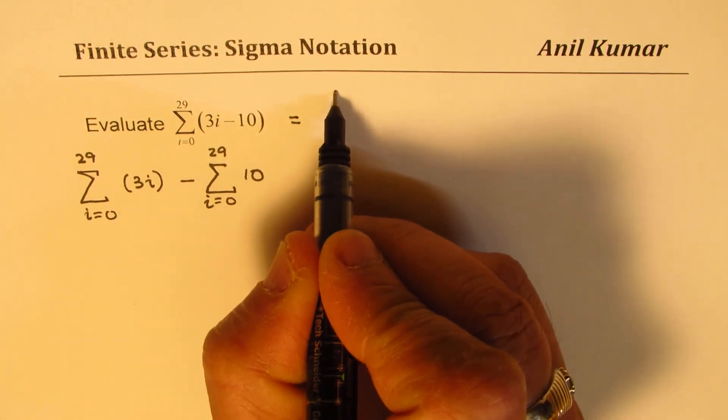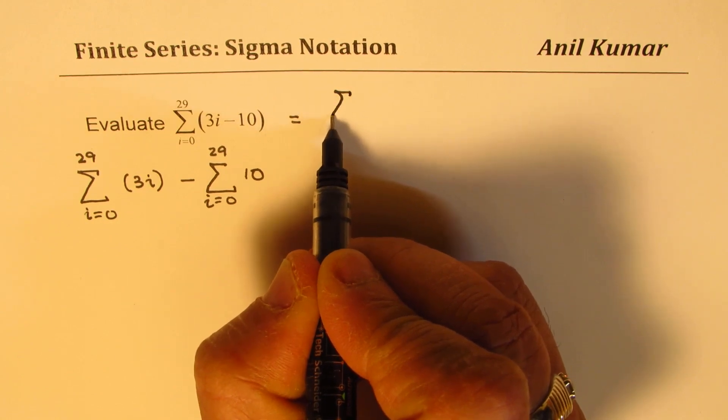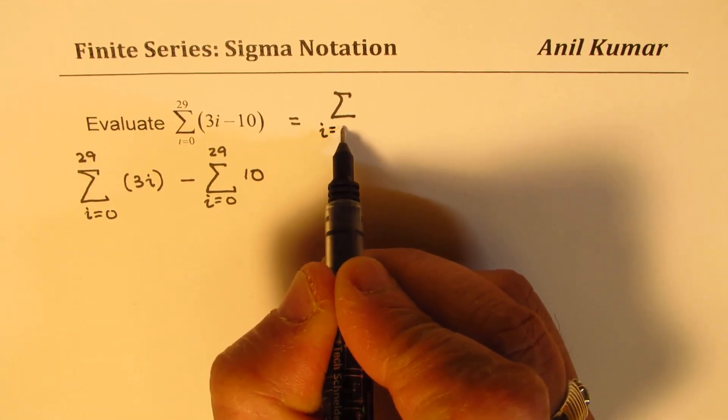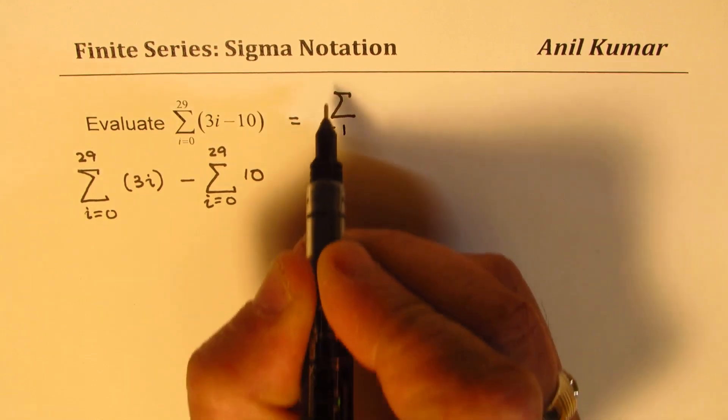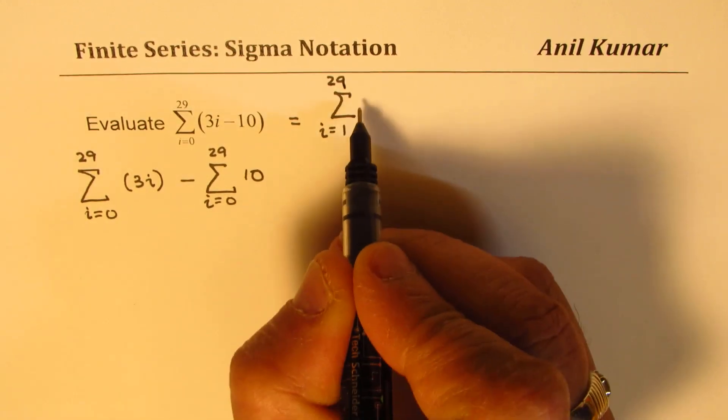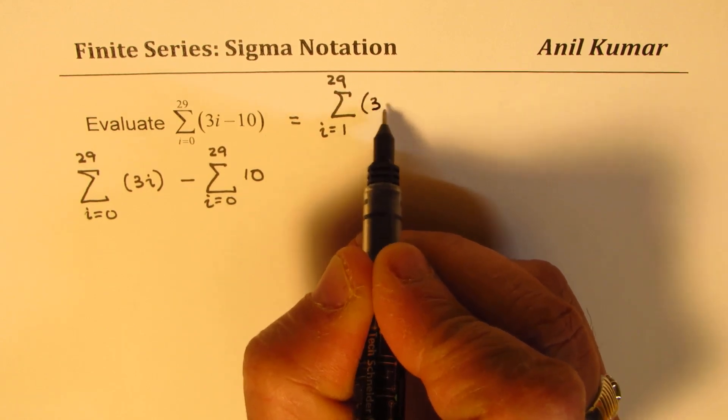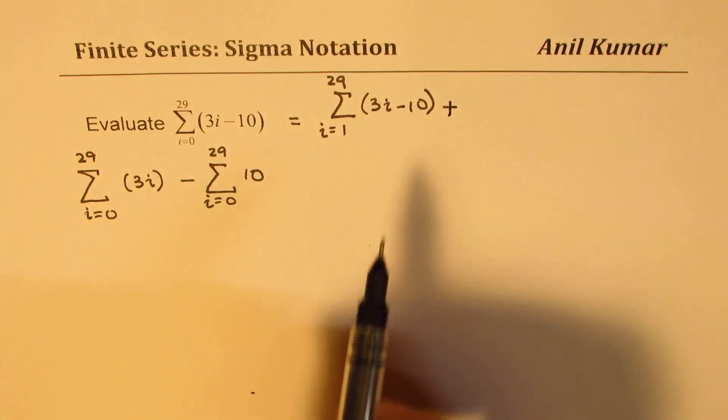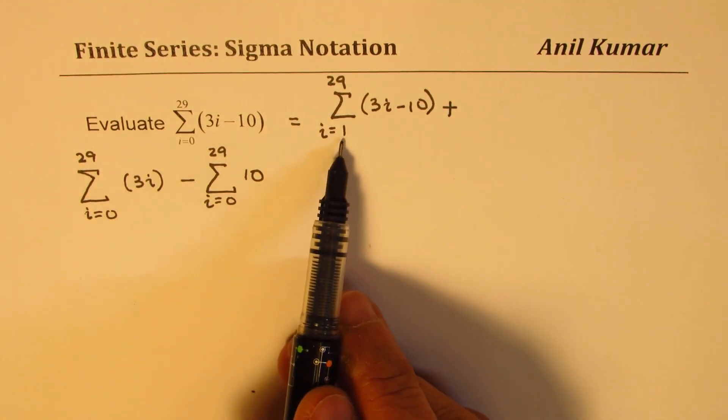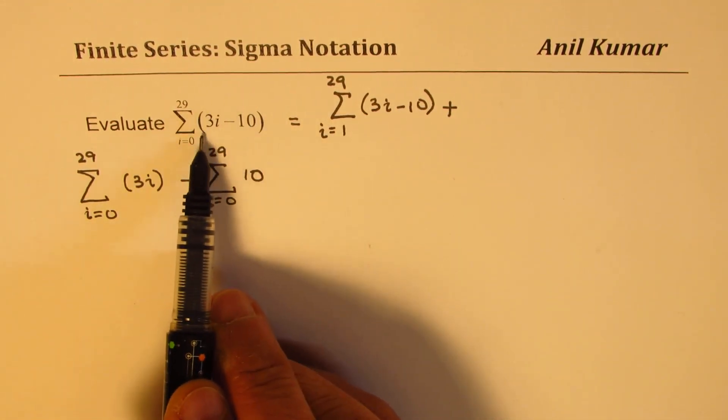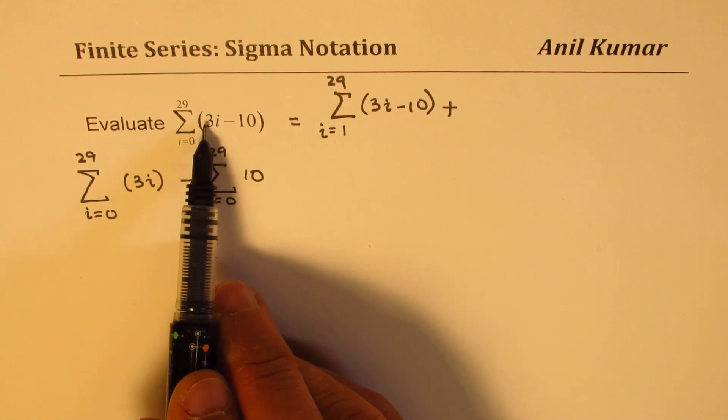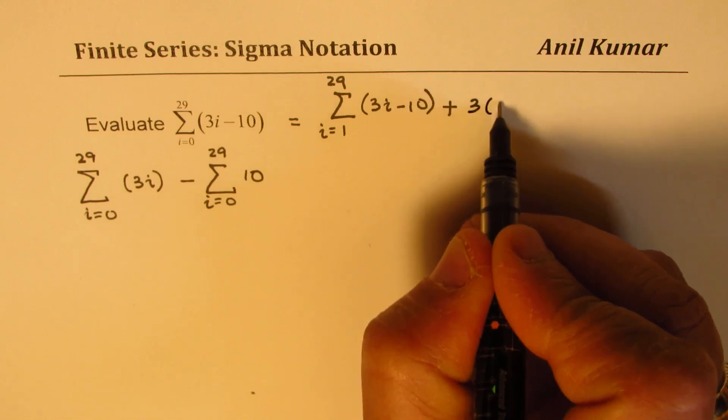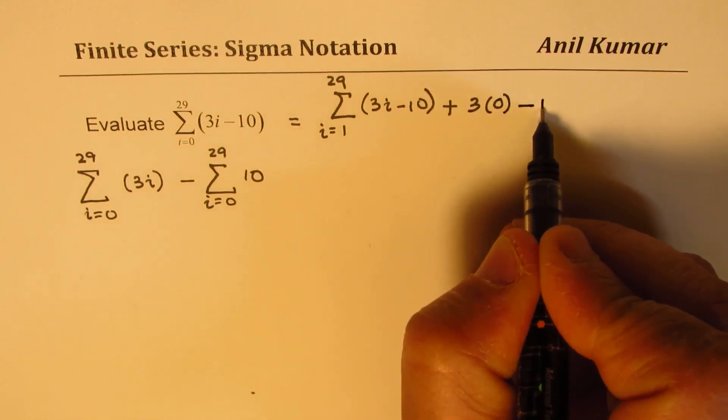So I'll rewrite my question as: It is from i equals to 1 to 29 as it is a standard thing, of 3i minus 10 plus, what happens when i is 0? If i is 0 in this term, then it becomes 3 times 0 minus 10. Is it clear?